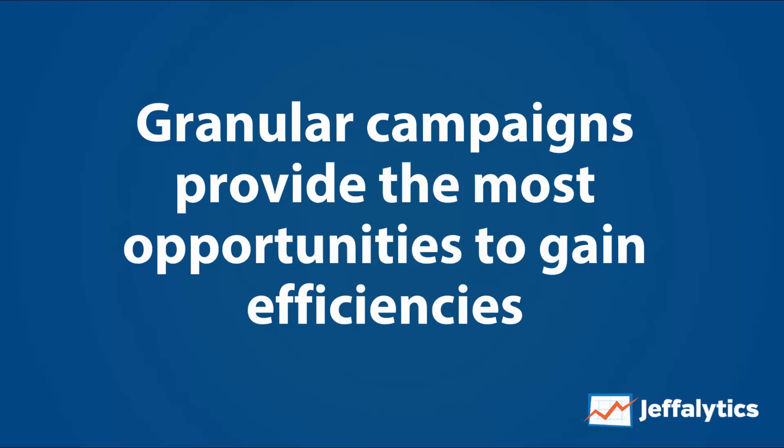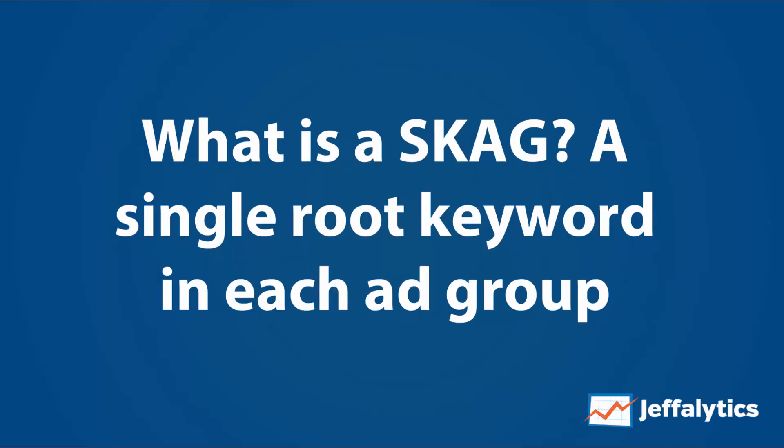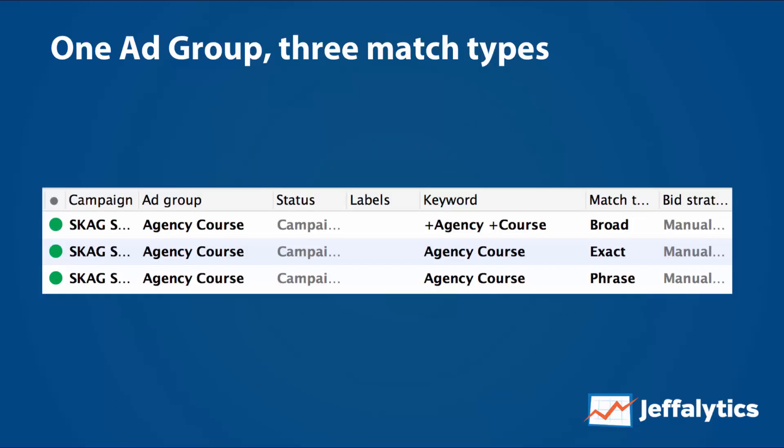So what is a single keyword ad group? It's a single root keyword in each ad group. For example, if I'm advertising for my agency course, I'd create an ad group called 'agency course.' Within that root ad group, I want three keyword variants — these are the head terms. First: plus agency plus course — broad match modified, which has some restrictions on what can show up. We also have the exact match and phrase match versions of this keyword.